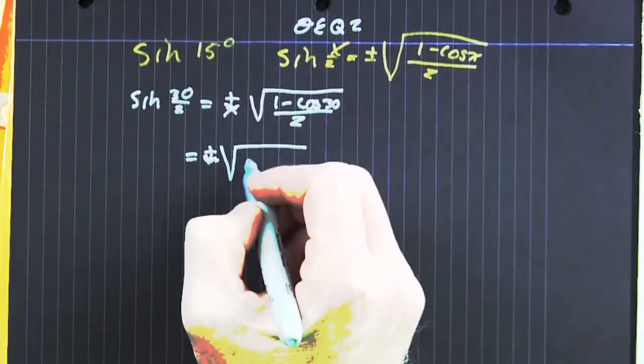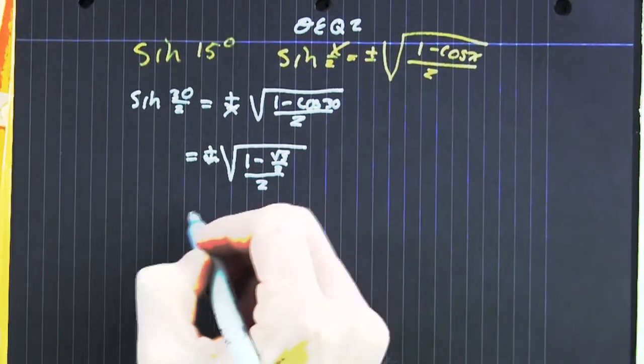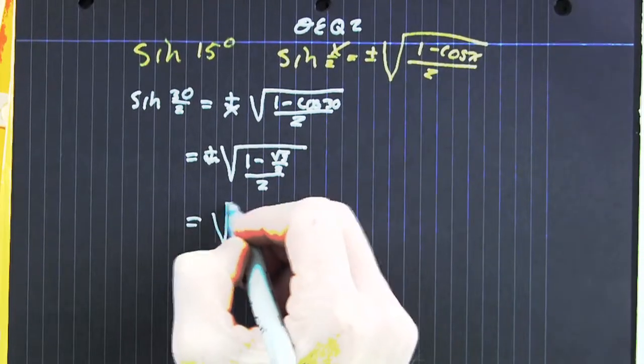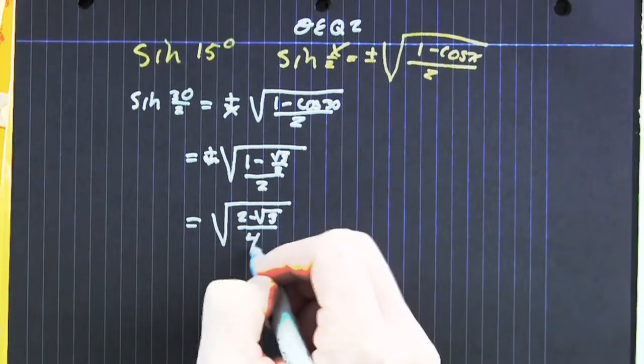Now we're evaluating this. The cosine of 30 is root 3 over 2, and then that's all over 2. Now we do some algebra. There you go.